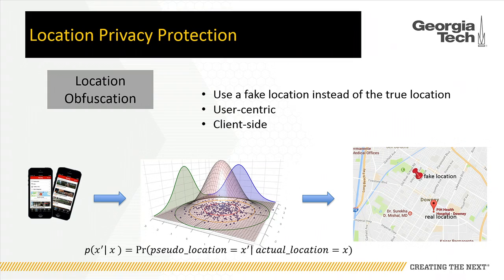The disadvantage is it may degrade your service quality, because the restaurant list returned from the server contains restaurants nearby the fake location and may not contain the nearest restaurant near your real location. But its advantage is it is user-centric: every person can independently perturb their locations, the noise level is totally in their control, and it can run entirely on the client side, which can be easily implemented in mobile applications.